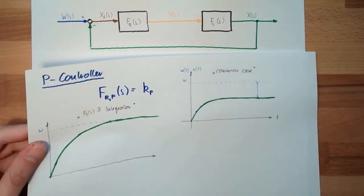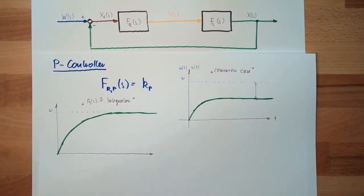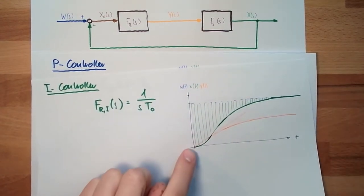We said the P-controller reacts fast at the beginning and in the end it does not care. We said the I-controller does not care in the beginning and in the end it is very accurate.